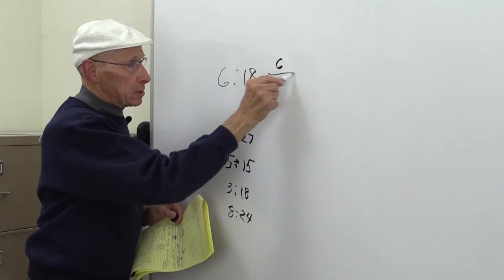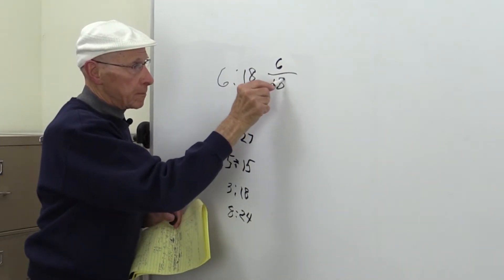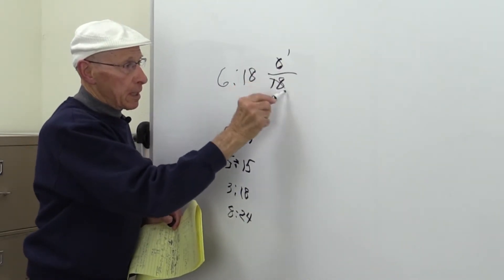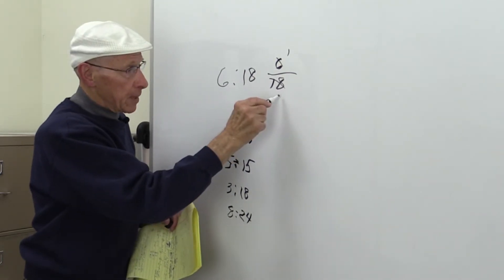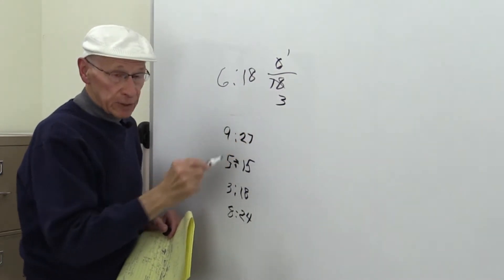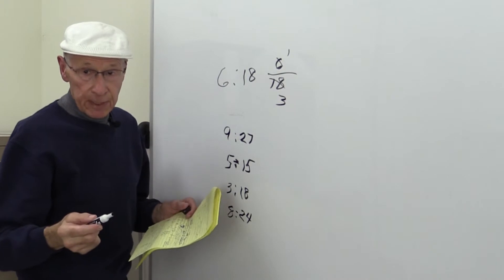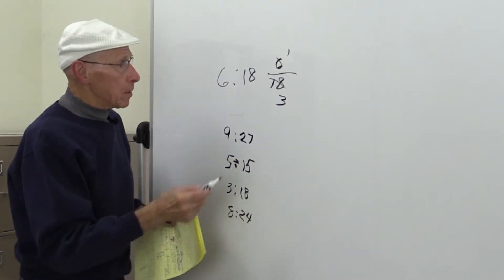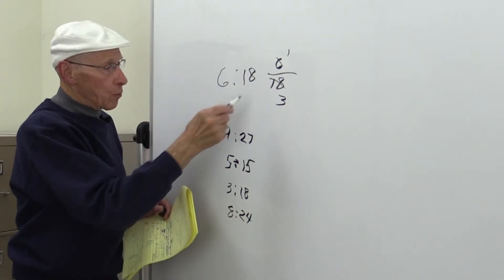So 6 over 18. 6 goes into 6 one time. 6 goes into 18 three times. By the way, that's the multiplication table, right? 6 times 3. So this breaks down into 1 third.